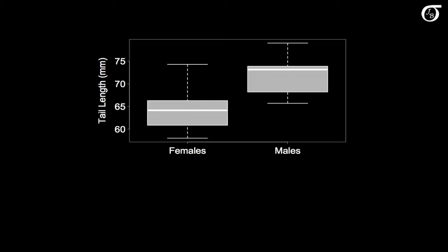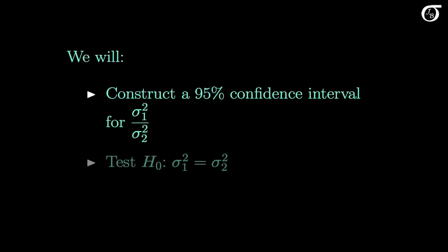Judging by the spread of the box plots, the variability of the tail length appears to be similar for males and females. And if we calculate the sample variances using our usual formula, we end up with sample variances of 13.377 millimeters squared and 12.141 millimeters squared. There doesn't appear to be much of a difference in the variances, but let's see what a formal statistical analysis has to say. In this video we will construct a 95% confidence interval for sigma 1 squared over sigma 2 squared, the ratio of population variances, and we'll carry out a hypothesis test of equality of variances.